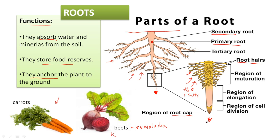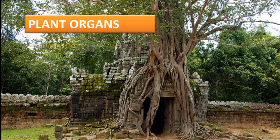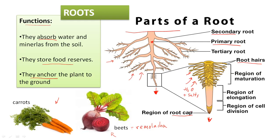Those are the most important parts of the root. In this image, I use a tree growing over a stone temple in Cambodia. As you can see, you can see the three main organs: stems, leaves, and also roots. Roots are usually underground, but in this case some plants have aerial roots. Functions of roots: absorb water and salt from the soil, store food, and anchor the plant to the ground.